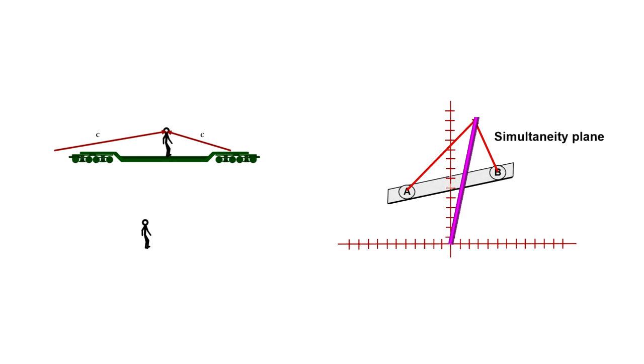So we see that the simultaneity plane for the moving person is necessarily tilted up on the right.